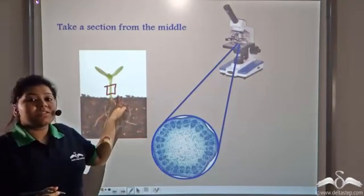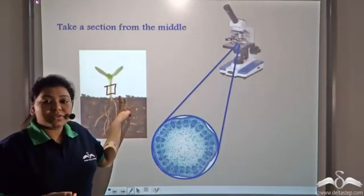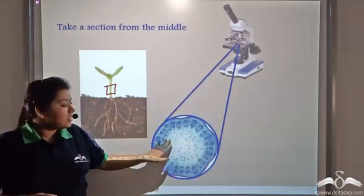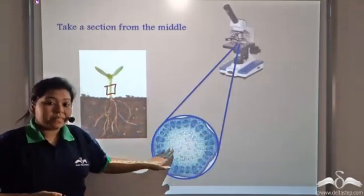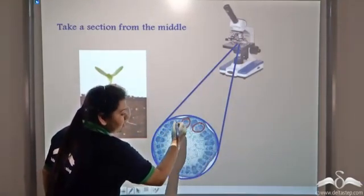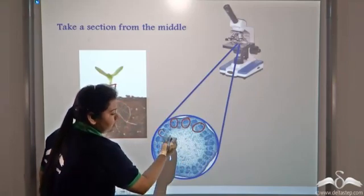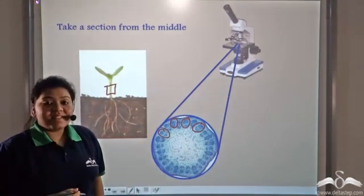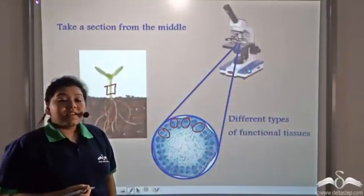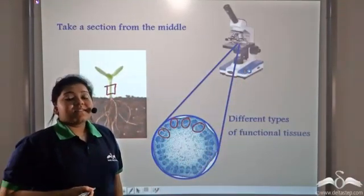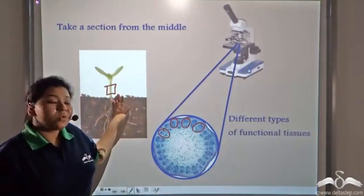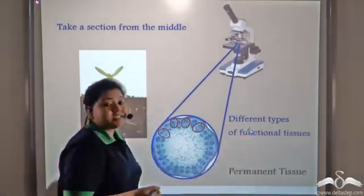Let us take this portion of the plant that did not grow and observe it under the microscope. This is what you see — you can see a lot of cells, and these cells carry out different functions. The cells that form the tissue in this portion of the plant are known as the permanent tissue.